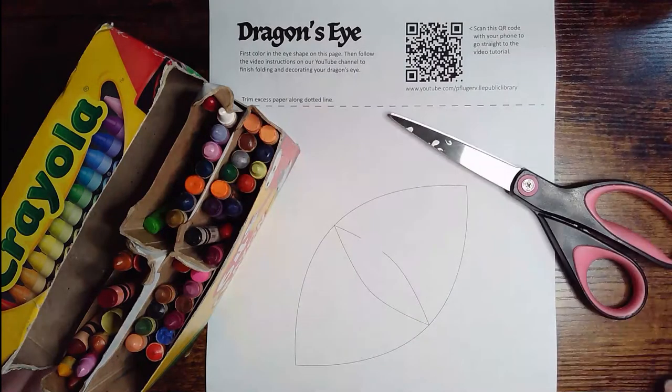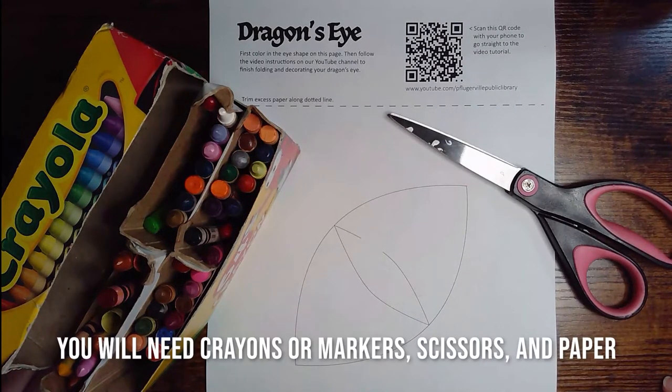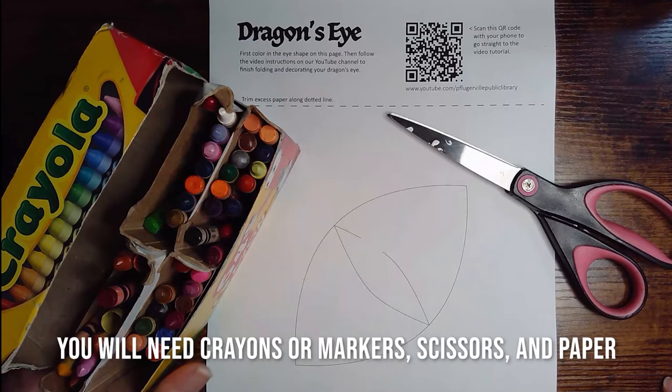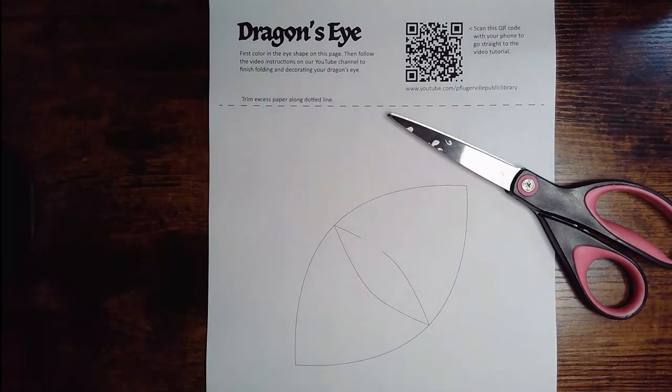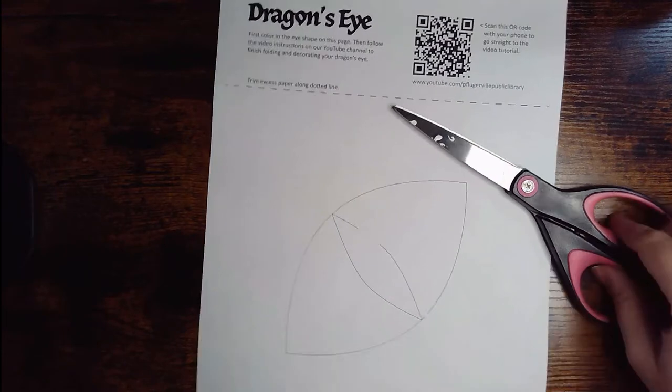To make the blinking dragon eye craft, you'll need some crayons or markers, scissors, and a piece of paper. You can use the template that I've provided, or you can use a blank piece of paper cut into a square.